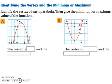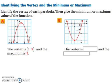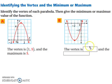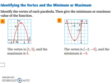Let's identify the vertex and the minimum or maximum. For part a, the vertex is the coordinate 1, 5, and the maximum is 5 — it's the maximum height of the graph. For part b, the vertex is the coordinate negative 2, negative 5. It opens up, so it has a minimum, and the minimum is negative 5.